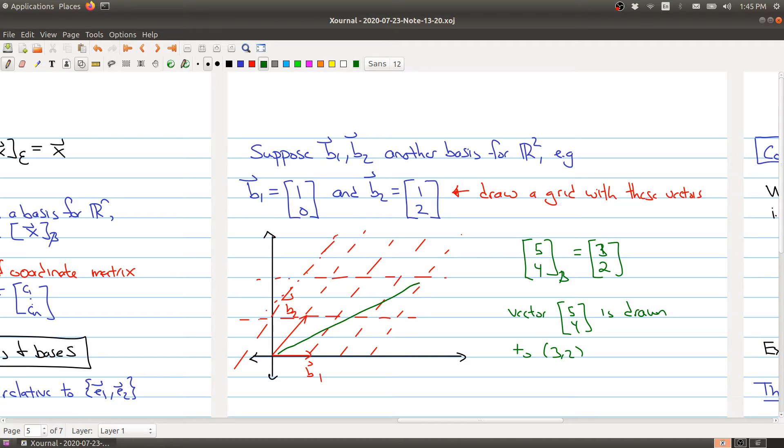Okay. So it'd be right here. So you can think of this vector as 5, 4 in the standard basis, but it's also the vector 3, 2 with respect to this new basis. Okay. So it's drawn to 3, 2.